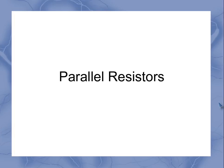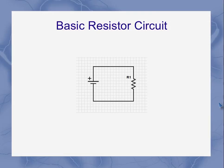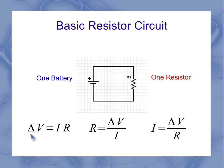Now we're going to look at parallel resistors. We start with our basic resistor circuit, which has one battery and one resistor. We remember that our definition of resistance related the voltage to the current for a particular device. I could algebraically rearrange that equation to solve for either the voltage or the current in terms of the other two quantities.